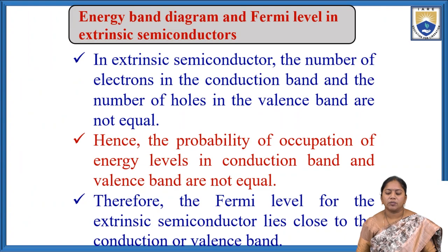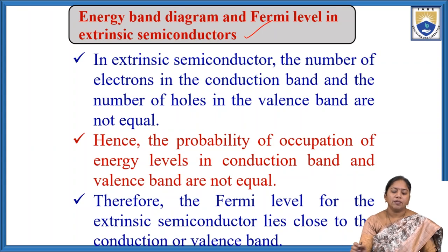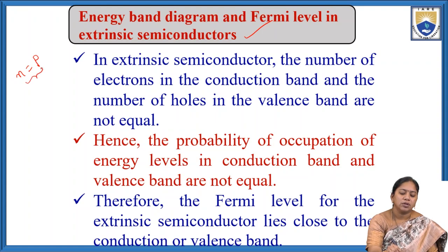In extrinsic semiconductors, the number of electrons in the conduction band and the number of holes in the valence band are not equal. Whereas in intrinsic semiconductors, the number of electrons N is equal to the number of holes. But in extrinsic semiconductors, the number of electrons is not equal to the number of holes.